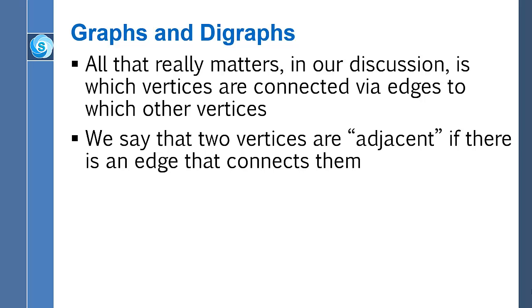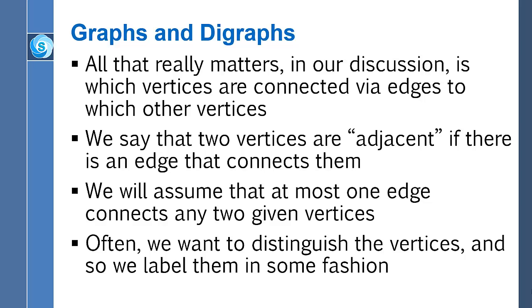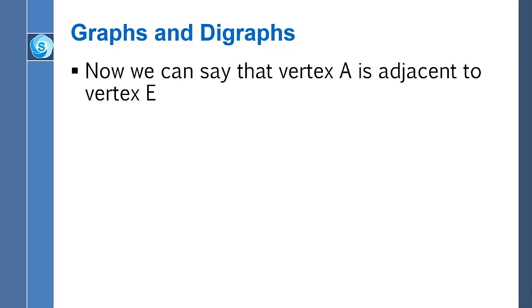We say that two vertices are adjacent if there's an edge connecting them. We're going to make the assumption that given any two vertices, there's at most one edge connecting them. There's a more general sense of graphs in which you're allowed to have multiple edges connecting a pair of vertices. Sometimes people give a special name to that and refer to it as a multi-graph. We're not going to focus on multi-graphs here.